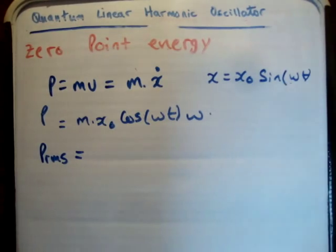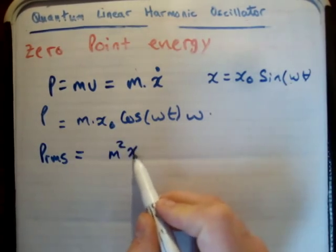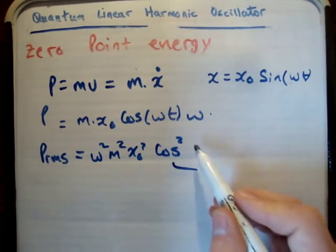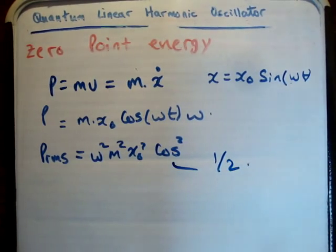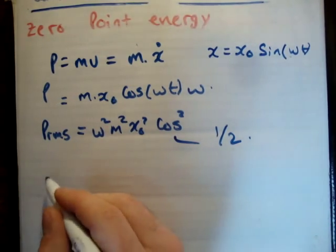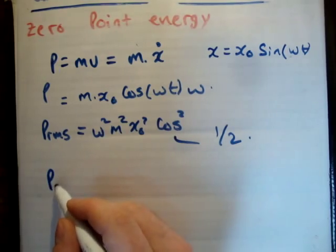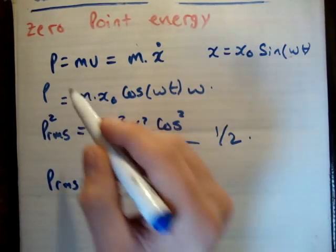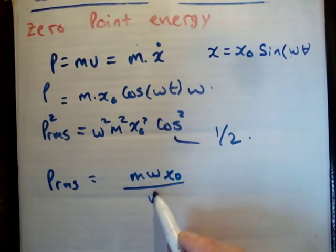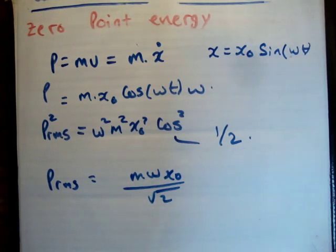So, what I'm going to do is I'm going to get p r ms. So, I'm going to square the whole thing and get the square root. So, m squared, x naught squared, cos squared, and we have omega squared here. The average of cos squared is 1 half. And, that's something you're just going to have to accept. If you want to know exactly what it is, you should ask a mathematician. So, that means that p r ms is equal to m omega x naught over root 2.